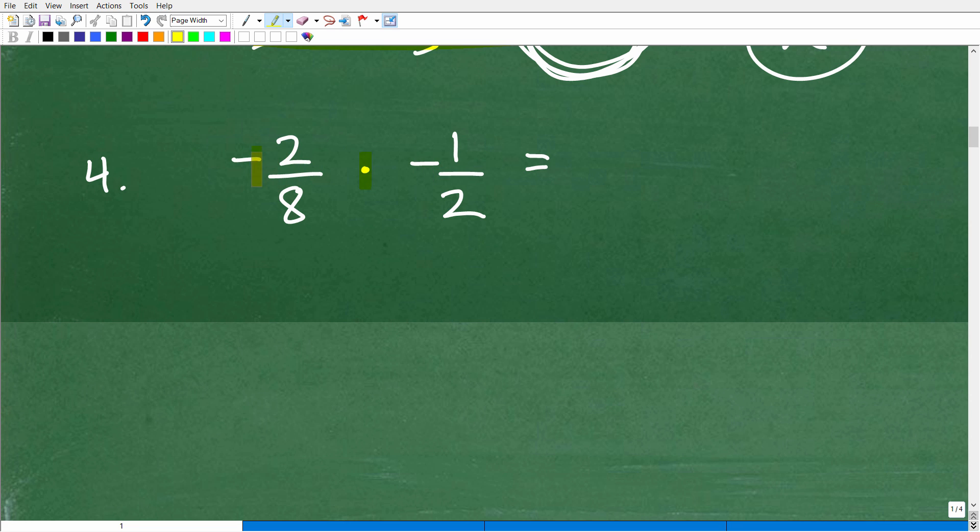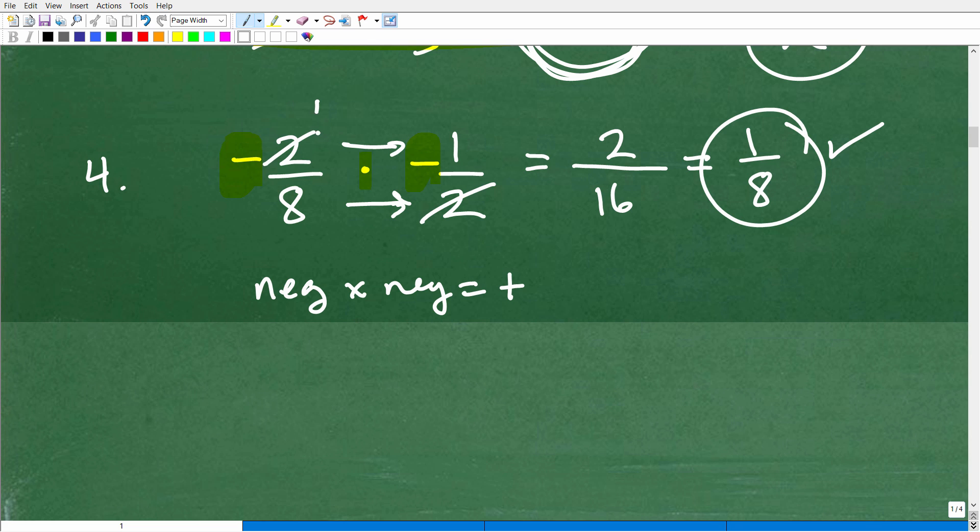What we do have to do is just keep in mind what is going to be the sign of our answer. So this is multiplication. And we're multiplying a negative number times a negative number. So what is that? Well, a negative times a negative is going to be positive. So once you recognize this is going to be a positive result, then just kind of don't worry about the signs. Okay, just go ahead and work on the actual problem itself. So let's go ahead and do it both ways. We'll go 2 times 1, which, of course, is 2. 8 times 2 is 16. And I can reduce this as 1 eighth. So that is the final answer, positive 1 eighth. Or I can go ahead and cross-cancel these factors. 2 goes in this 2, 1. And I'll end up with 1 over 8. Again, 1 eighth, positive 1 eighth is the final answer.